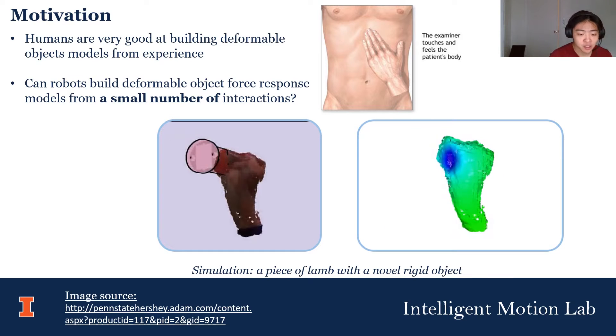When we humans touch and interact with a soft object, we quickly understand how it feels and behaves. For example, doctors use palpation to find anomalies very deep in tissue and to determine where to make incisions during surgery. But can robots do the same?